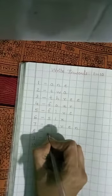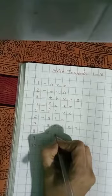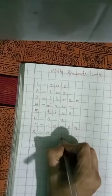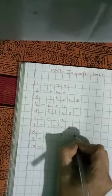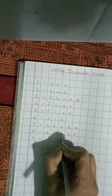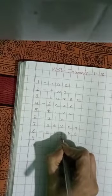Next is 8. E I G H T. Children, while writing G, it should come down.